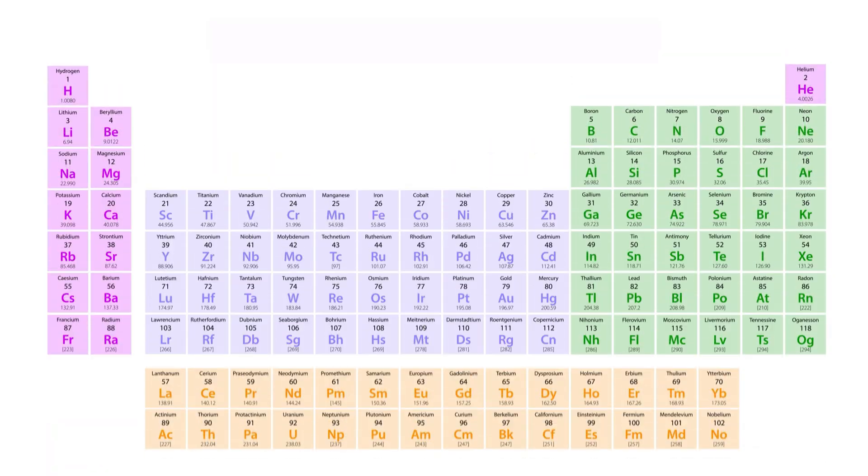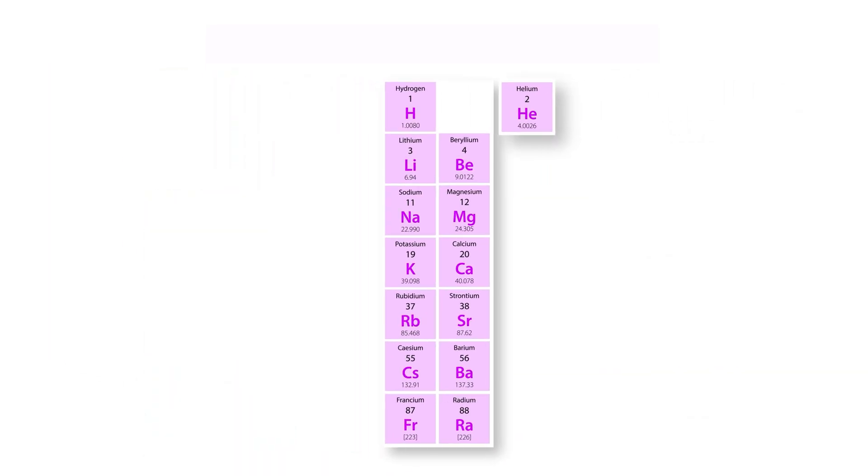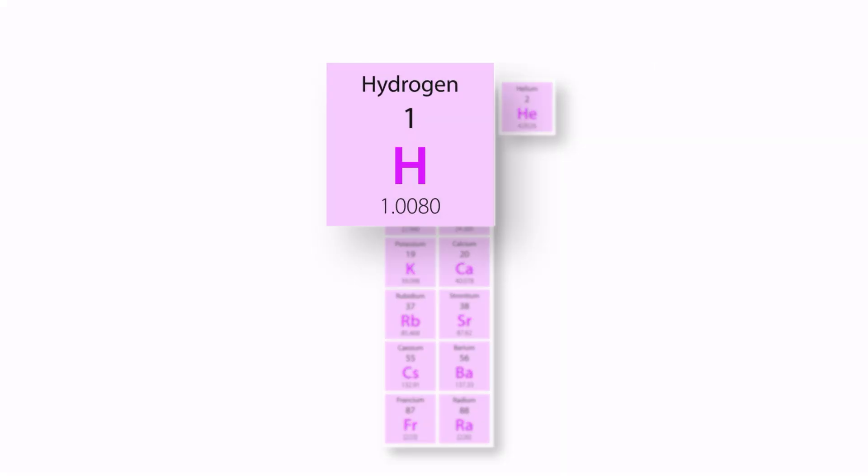Hydrogen is first on the periodic table because it has an atomic number of 1. H is its symbol, and its atomic weight of 1.008 is listed at the bottom. Its proper name, hydrogen, is color-coded to show that its state of matter is a gas.